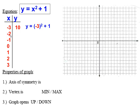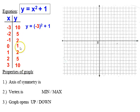When I plug in negative 2, I get negative 2 times negative 2 which is positive 4, plus 1 gives 5. When I plug in negative 1, I get 2. Plugging in 0 gives 1. Positive 1 gives 2. Plugging in 2 gives 5, and plugging in 3 gives 10. You'll notice a pattern here — similar to the last examples — and as a result we're going to have some symmetry.